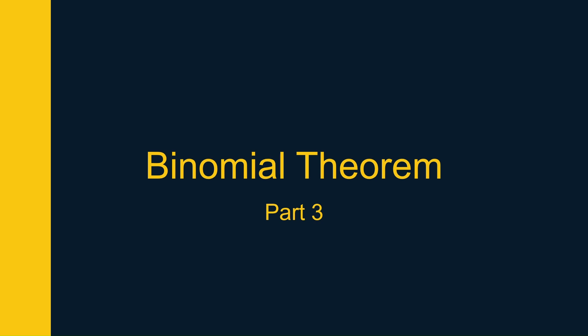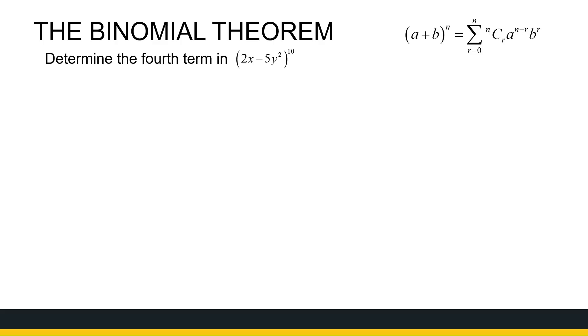We've now seen what the binomial theorem looks like, what it means, and we've looked at some applications on how to expand a binomial using the binomial theorem. In this section, we're going to look at some more specific questions — for example, determine the fourth term in the expansion of a binomial. Note that if your binomial theorem looks a little bit different, or you use some app to expand it, the fourth term will not necessarily be the same. So this is a subjective question, referring to the theorem as written.